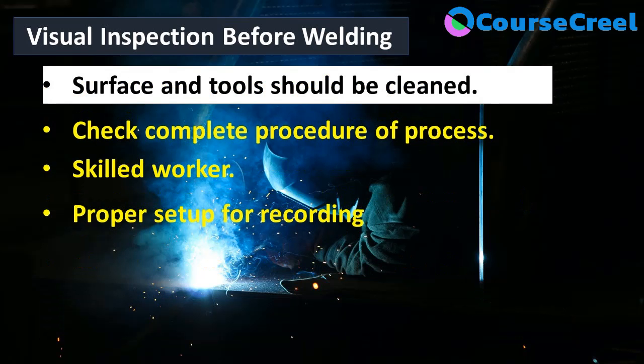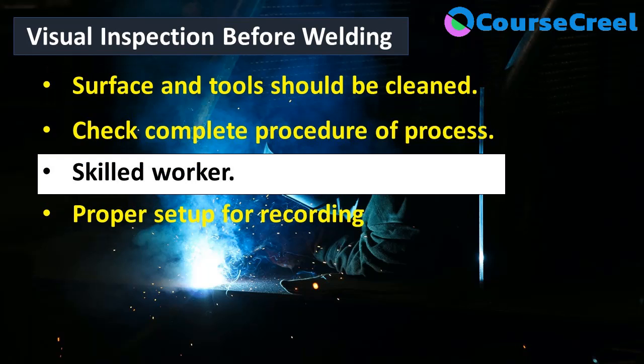The surface and tools should be properly cleaned — this is a very important step. The surface should be free from rust, oil, and grease, and there should not be any kind of cracks, notches, or irregularities. If any of these are found, they should be corrected before welding. The next most important step is that the welder should be skilled and experienced, as an unskilled welder can create discontinuities in the weld joint that affect the quality of the product.